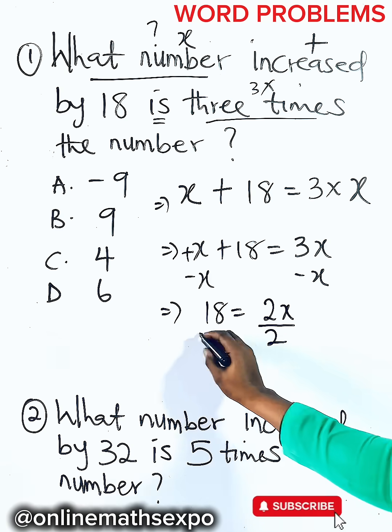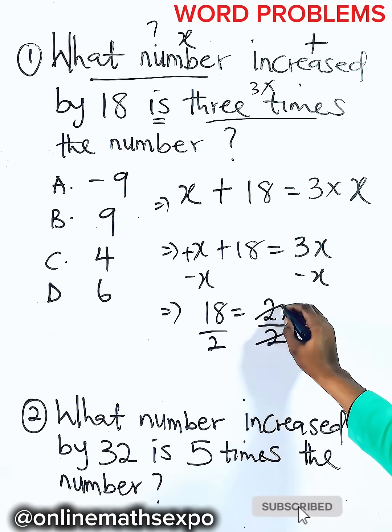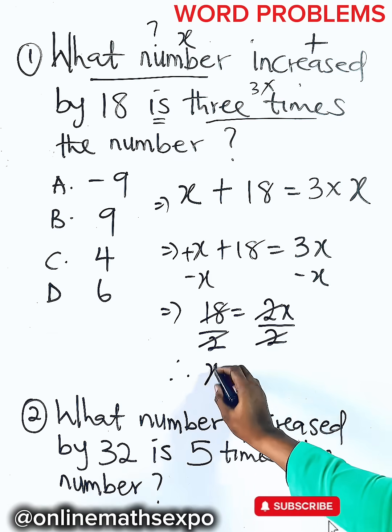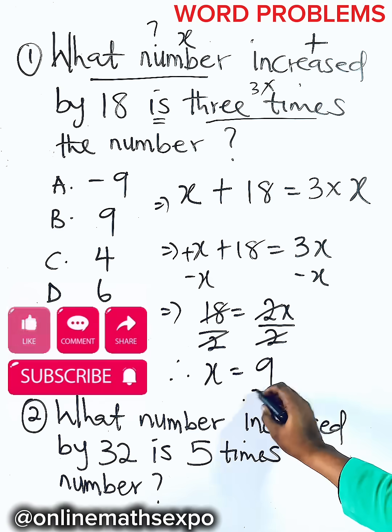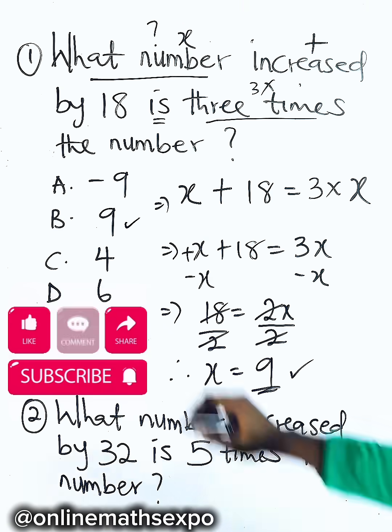To get x, divide both sides by 2. And when you do that, this will divide. So we have x is going to give us 9. And that is option B.